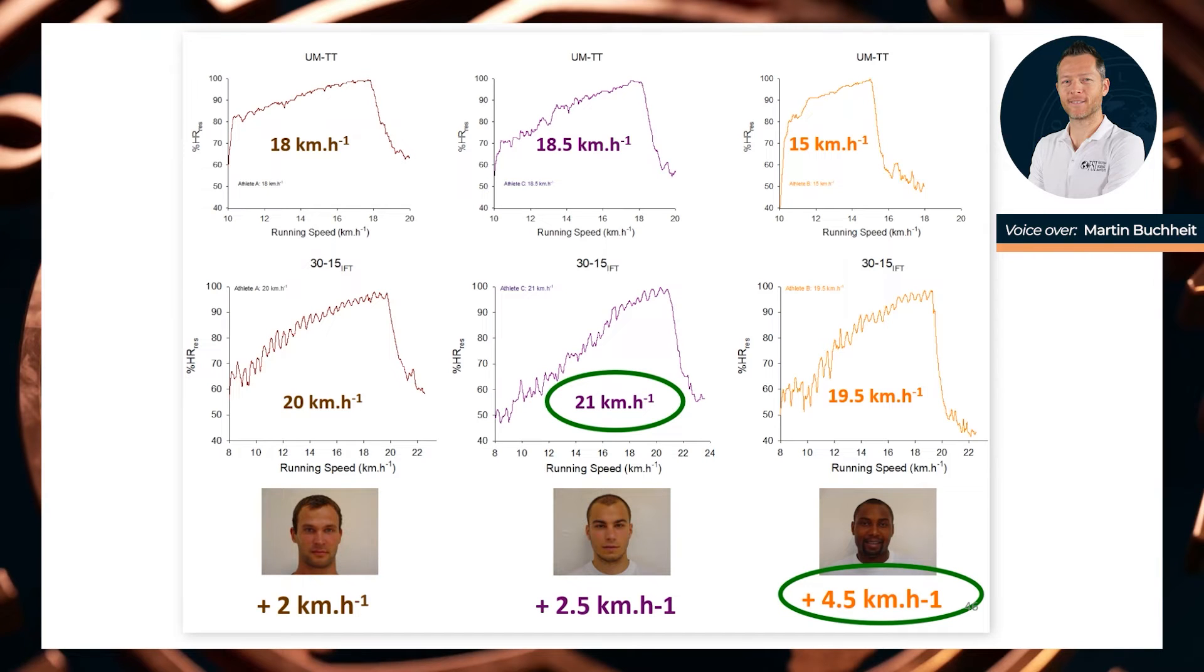This is the actual improvement between the continuous linear test and the 3015. The improvement is about 2 km for the aerobic guy,